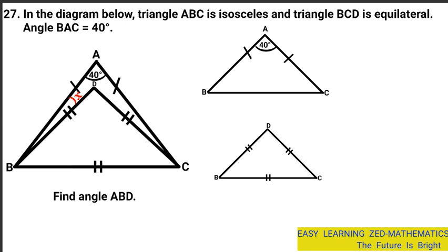I'm going to draw each triangle separately. Let me talk about the first one: the isosceles triangle ABC. This is the bigger triangle and it has one angle given, which is 40 degrees. You can see that sides AC and AB are equal — that's indicated by the short tick marks on those sides.